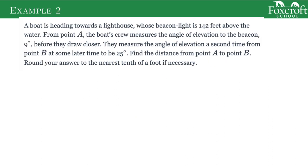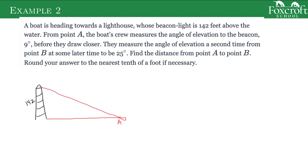All these situations are going to be slightly similar but just different scenarios with boats and planes and things. In this one, a boat is heading to a lighthouse whose beacon light is 142 feet above the water. So we have this lighthouse with a light at the top that's 142 feet. From point A there's a boat, and they measure the angle of elevation to the beacon — elevation means it's flat and I'm looking up at this beacon — and that's a 9 degree angle. From another point, point B, that same boat measures the angle of elevation to 25 degrees, and we want to figure out how far did the boat move from A to B.